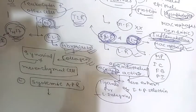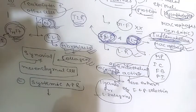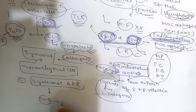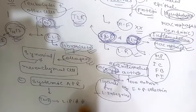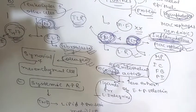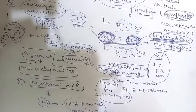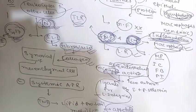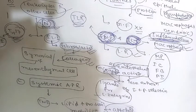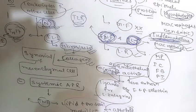The third function is the systemic acute phase response. IL-1 and TNF induce the systemic acute phase response associated with infection or injury, including fever. They are also implicated in sepsis syndrome. TNF also regulates energy balance by promoting lipid and protein mobilization and by suppressing appetite.